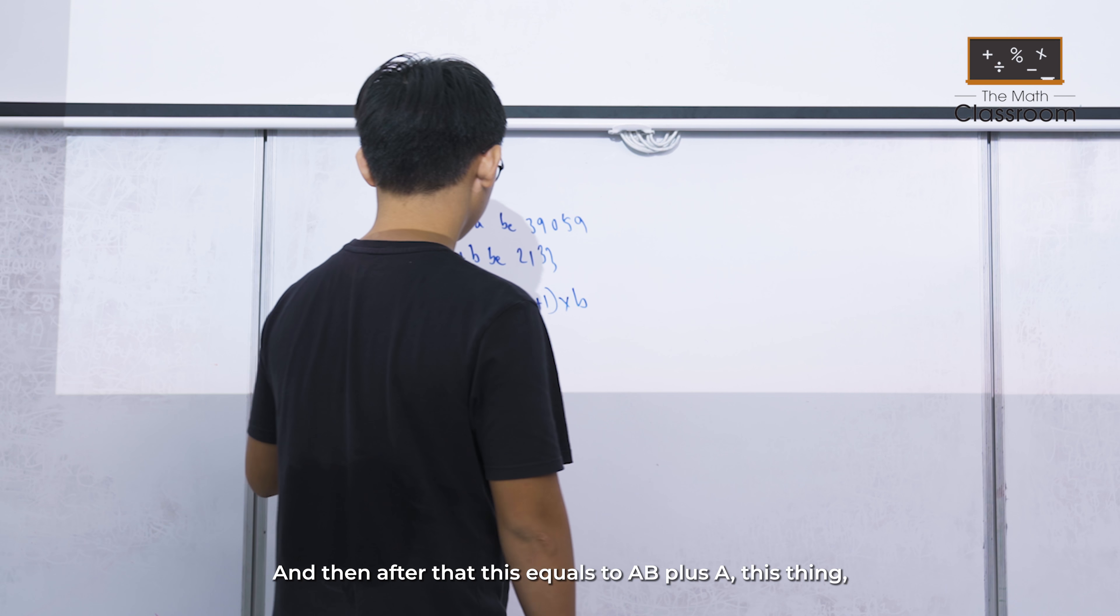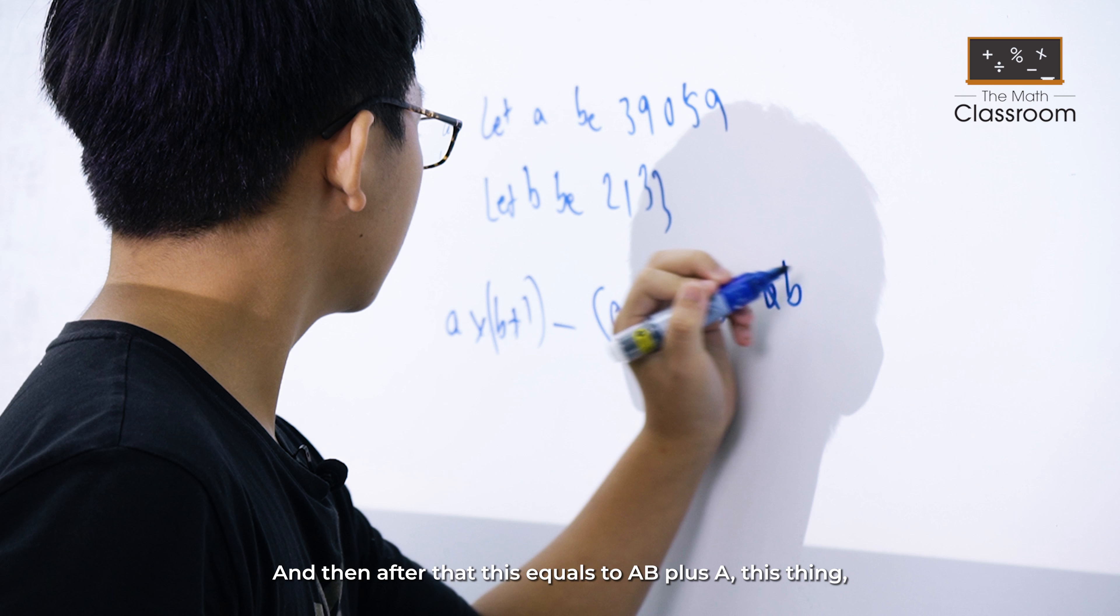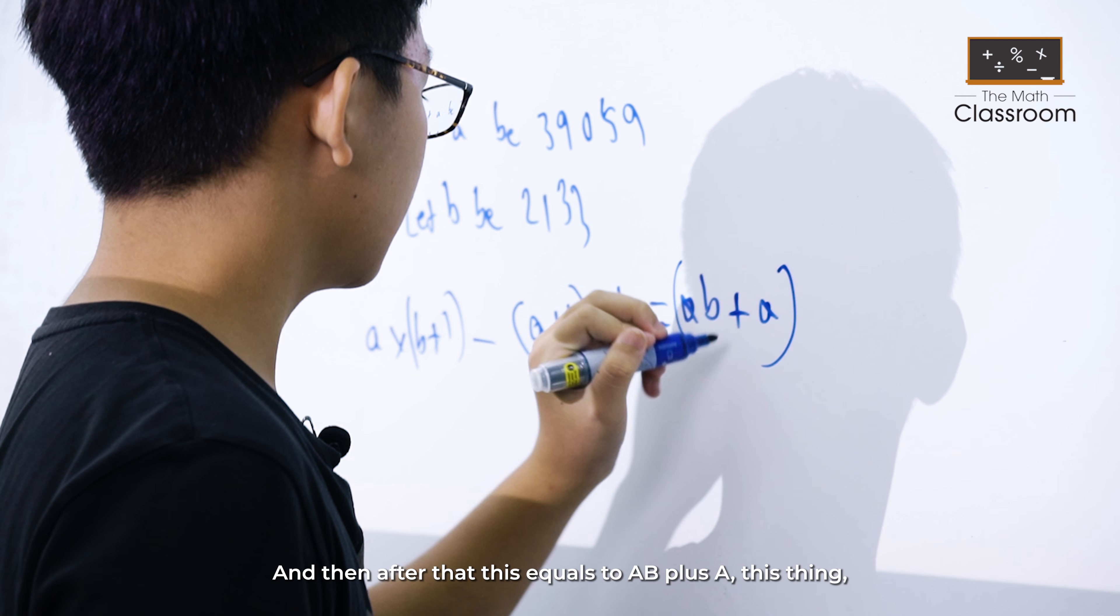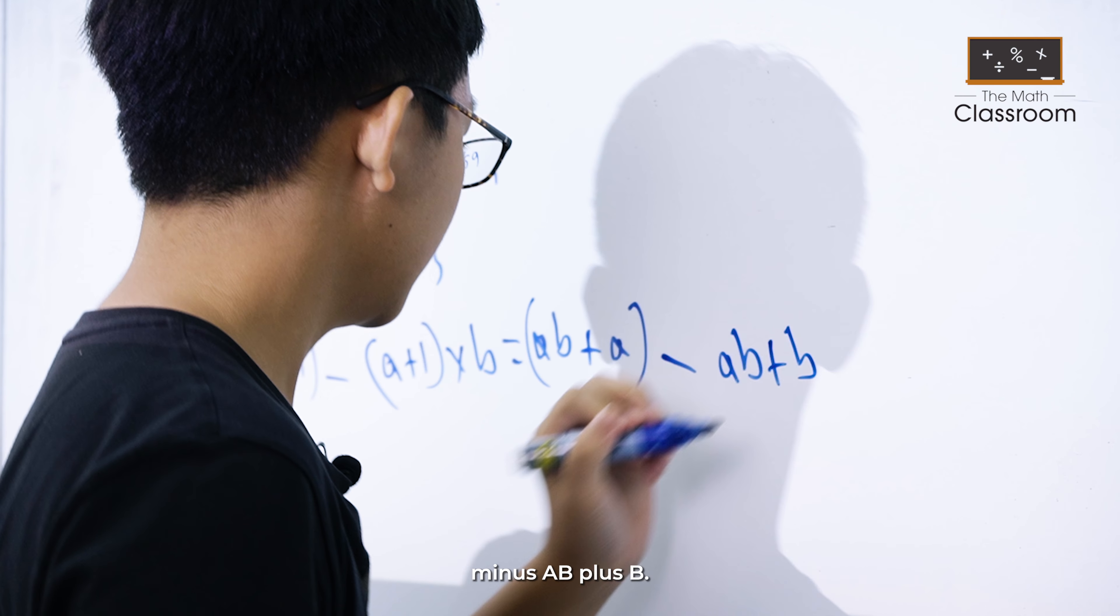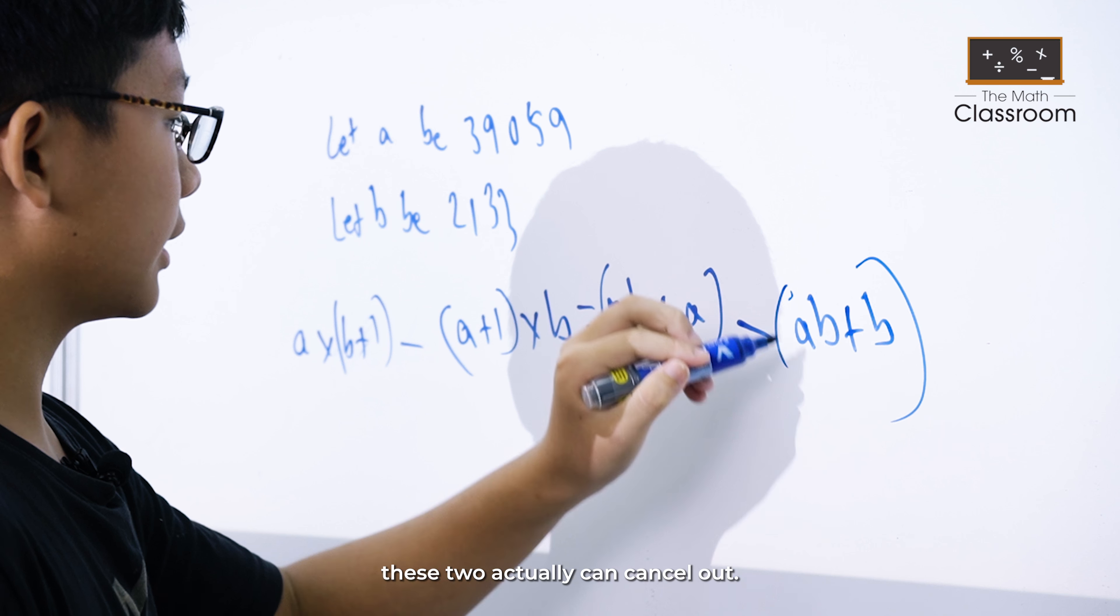And then after that, this equals AB plus A minus AB minus B. Then after that, these two can cancel out.